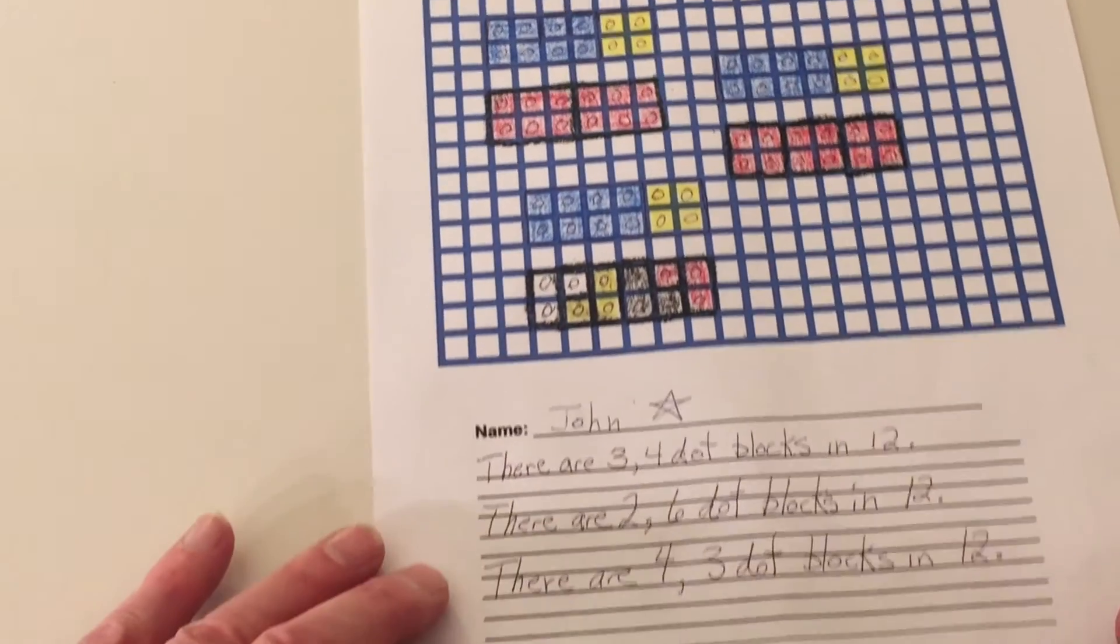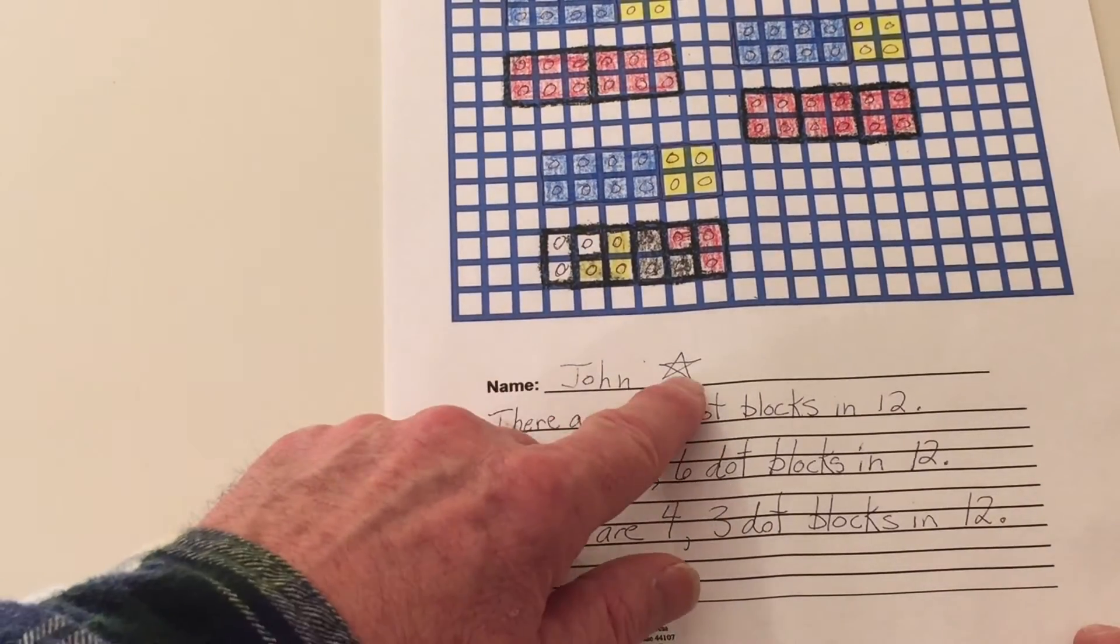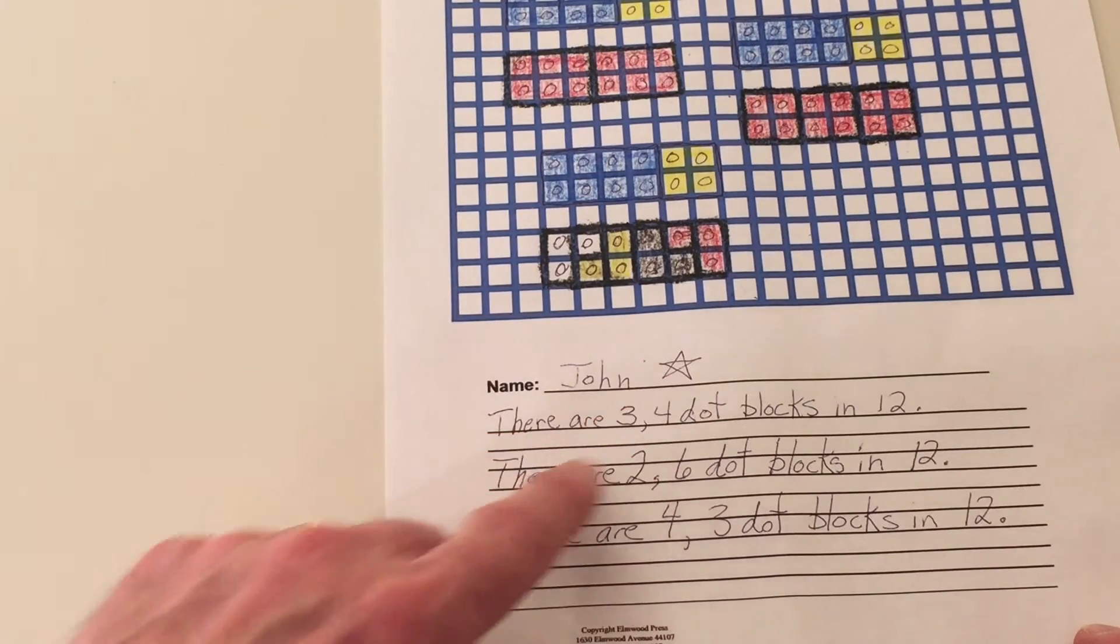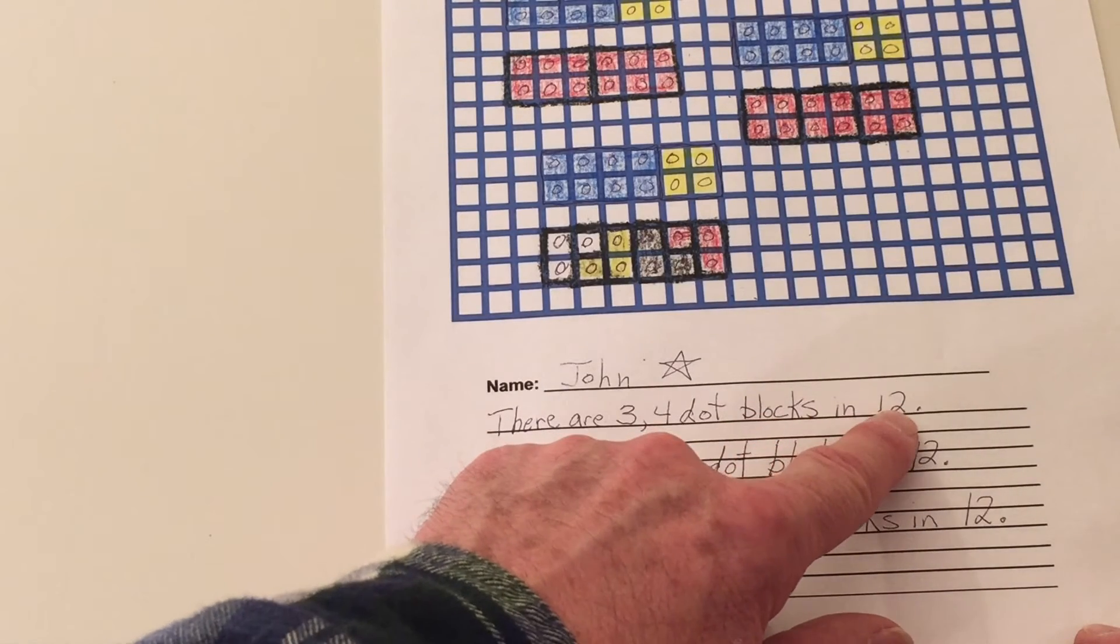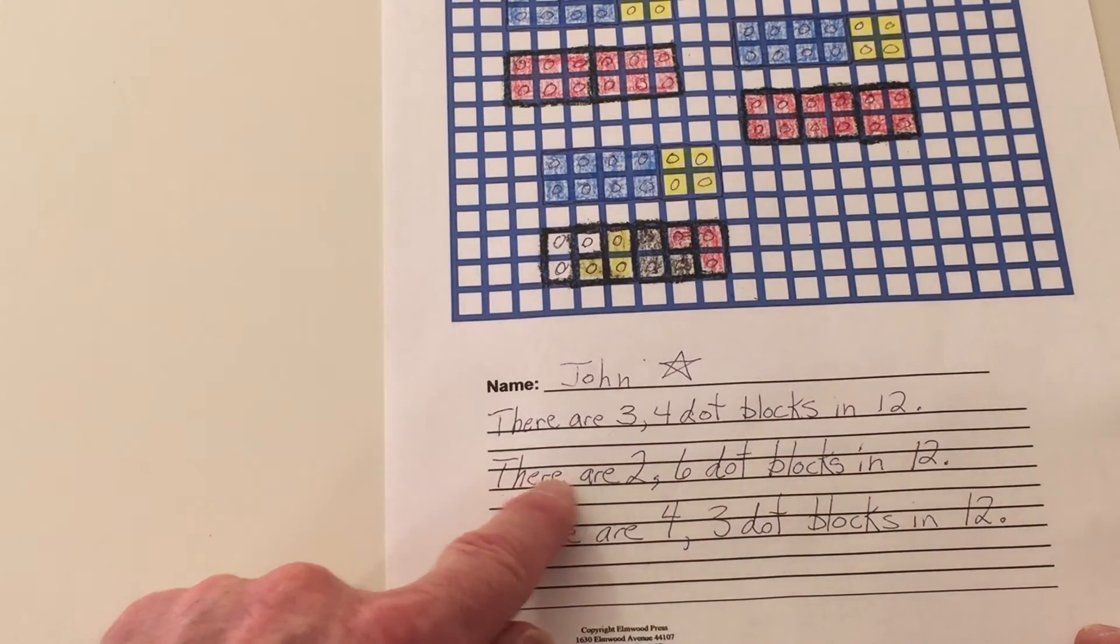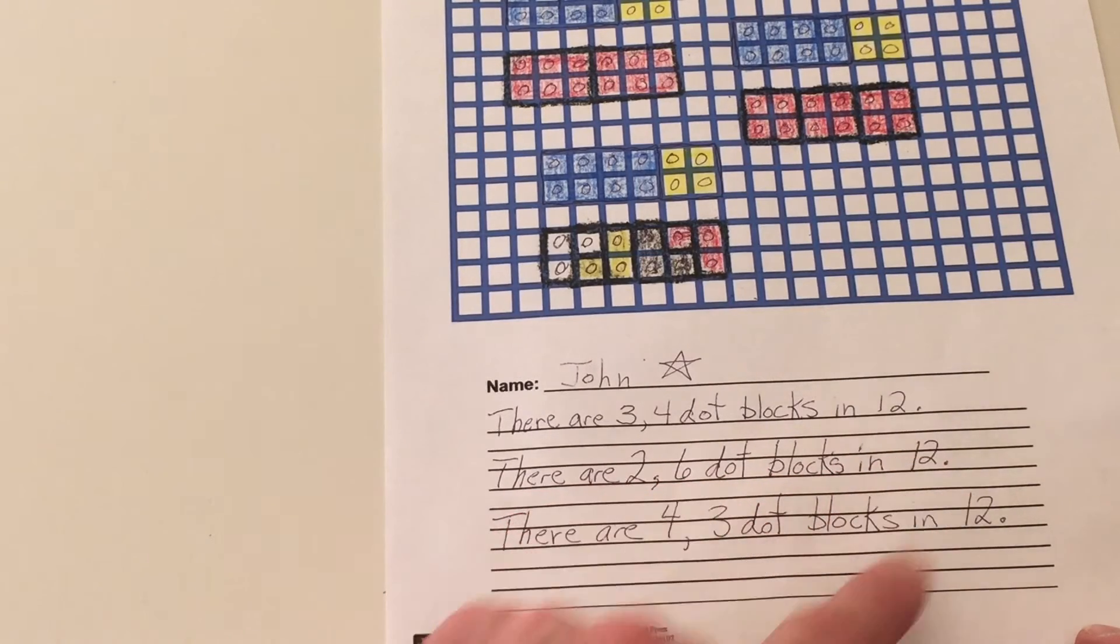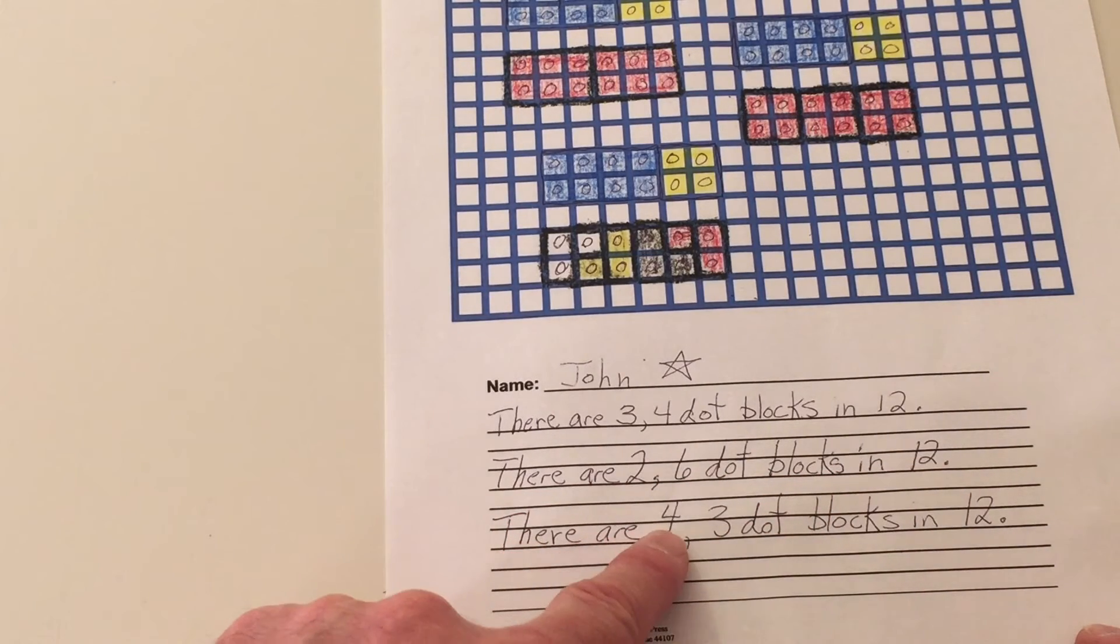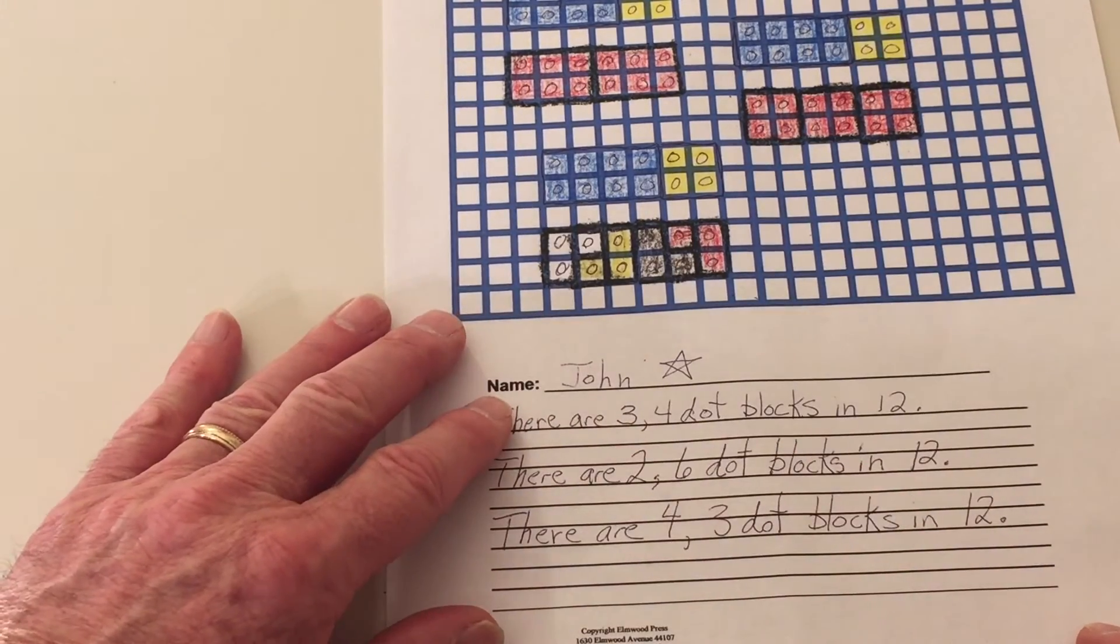And I wrote down some of our work. First, I put my name on the paper. I drew a little star. There are 3 4-dot blocks in 12. There are 2 6-dot blocks in 12. There are 4 3-dot blocks in 12. Nice work.